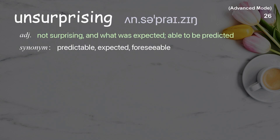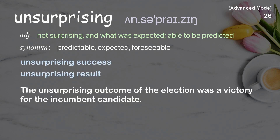Unsurprising: Not surprising, and what was expected; able to be predicted. Examples: unsurprising success, unsurprising result. The unsurprising outcome of the election was a victory for the incumbent candidate.